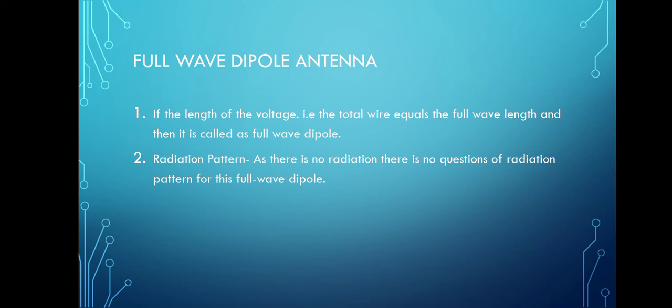The figure shows the voltage distribution of a full-wave dipole with length lambda. Two half-wave dipoles are joined to make a full-wave dipole. The voltage pattern shows that positive and negative charges induced at the same time cancel each other out, so the induced charges make no further attempt at radiation. The output of radiation is zero for a full-wave dipole. The radiation pattern for a full-wave dipole antenna shows no radiation.